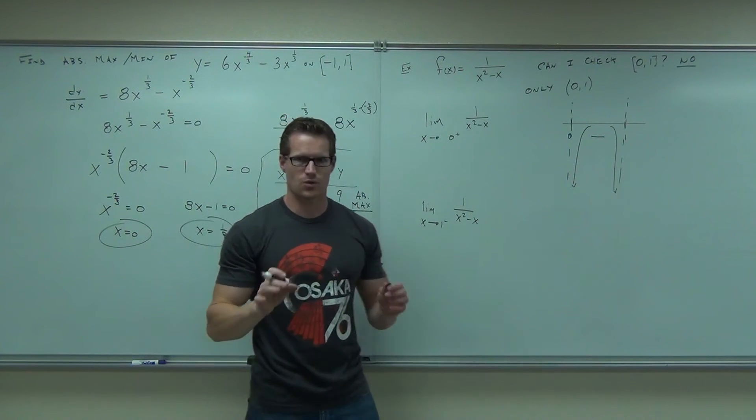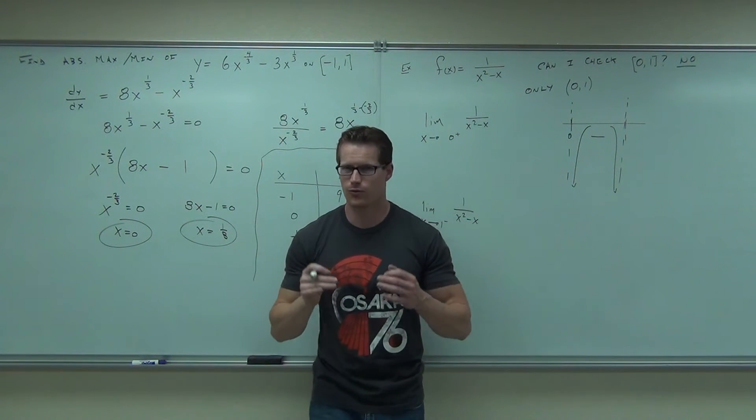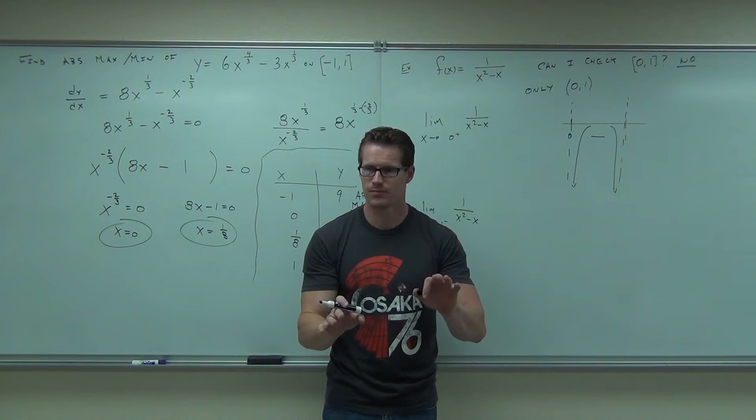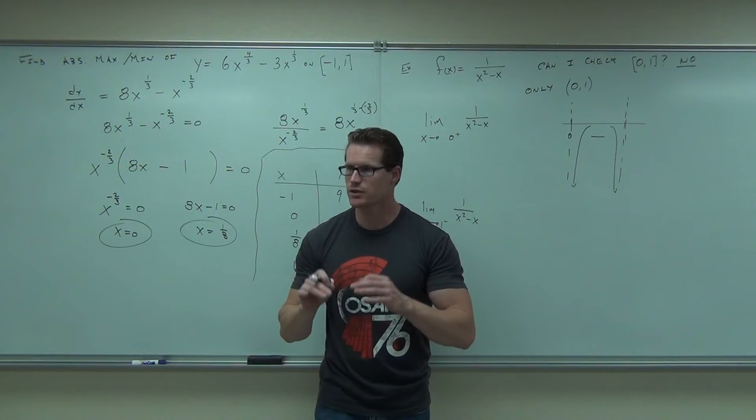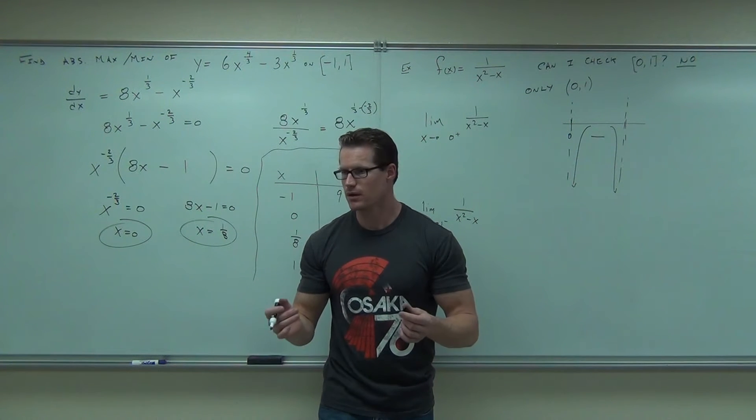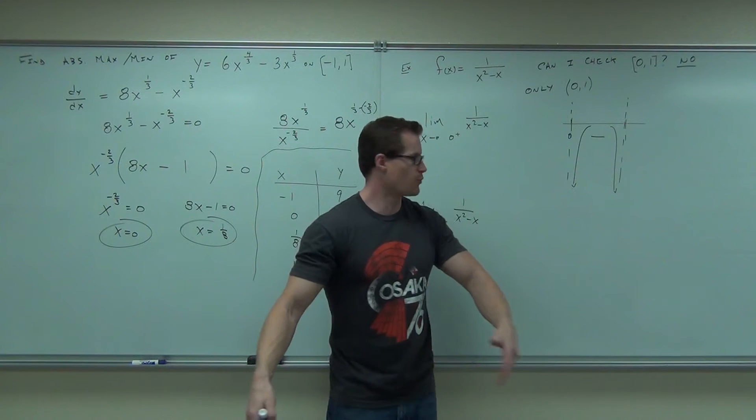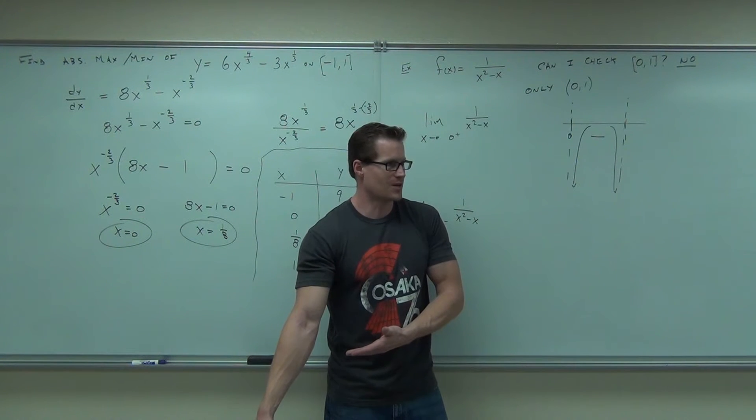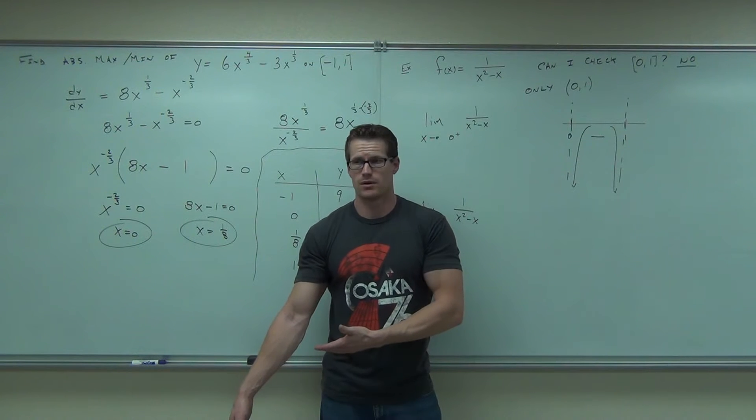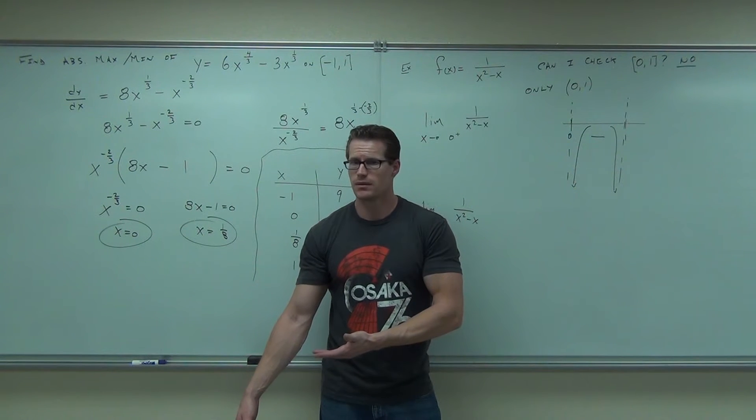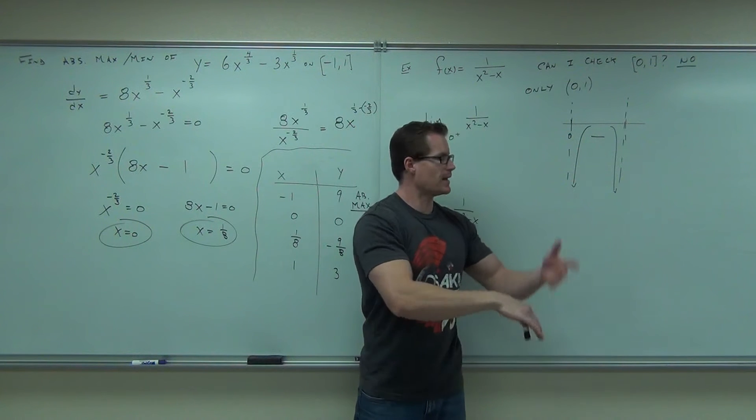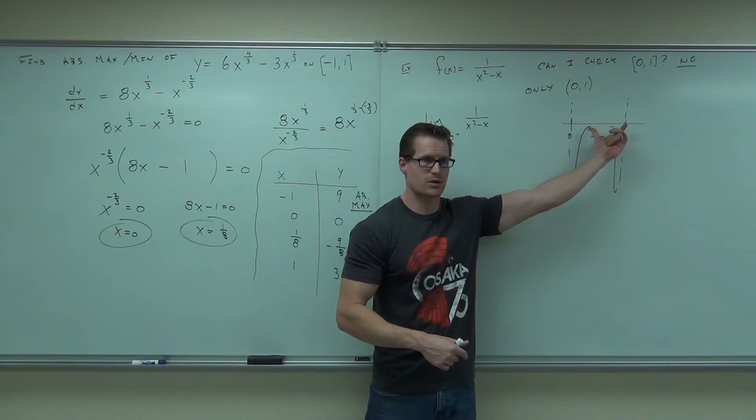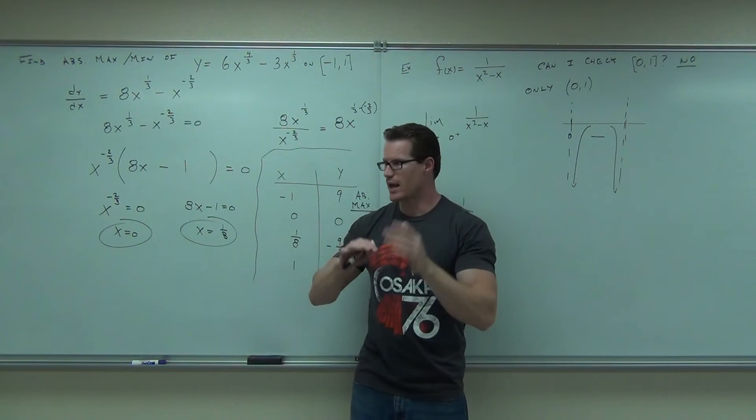I can guarantee you right now that we're not going to have what? Minimum. Because it comes there. It's going to come up, and it's going to go down. That says, on a continuous function, which this one is, in that interval, that's continuous. In that interval. That says we'll have an absolute max there.